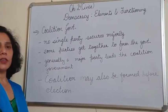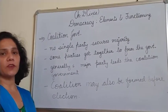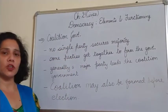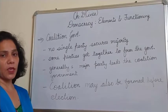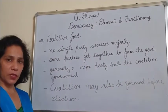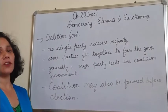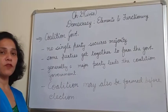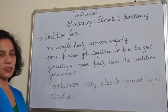Now in India, during a general election, sometimes a situation arises where no single party secures the majority required to form a government. In such a situation, some parties may get together and form the government. Such a government is called a coalition government, as it is formed by a combination of different parties.